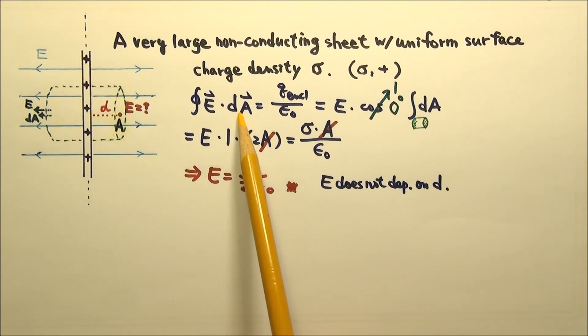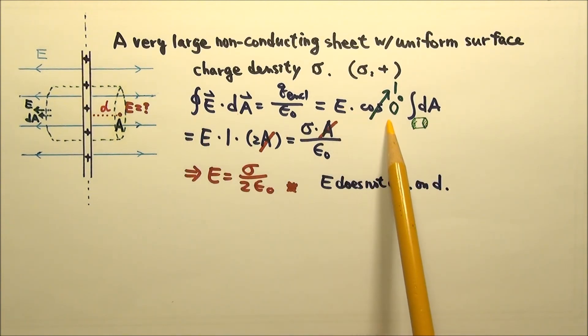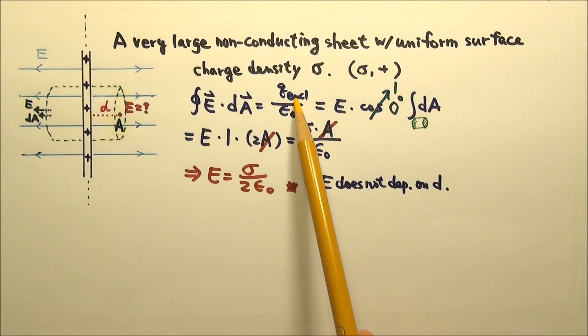Since electric field lines go out of positive charge and go into negative charge, and the dA is always the outward normal vector, when we use Gauss's law to find the electric field, this angle here will be 0 degrees if q enclosed is positive, and the angle will be 180 degrees if q enclosed is negative.